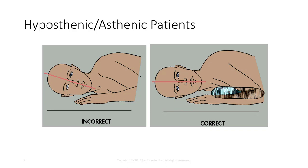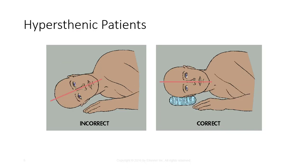Hyposthenic or asthenic patients usually need support at the chest level to elevate the cervical spine. This helps prevent downward tilt of the MSP, which can cause undesired tilt of the cranium for lateral views as shown here. Hypersthenic patients require radiolucent support at the head.